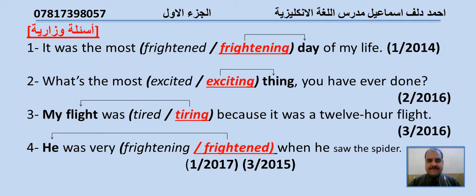Number three: My flight was tired/tiring because it was a 12-hour flight — third attempt 2016. We choose tiring, present participle, because it describes a thing — we have 'my flight' here. صارت الجملة: My flight was tiring because it was a 12-hour flight.